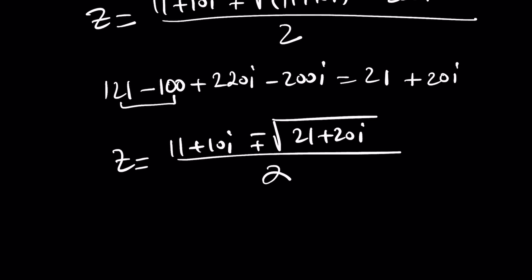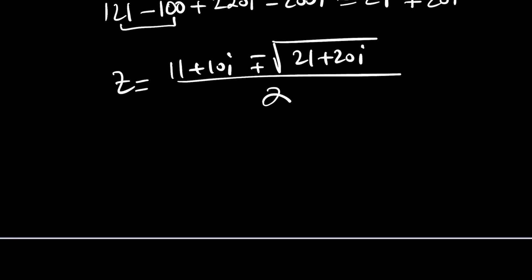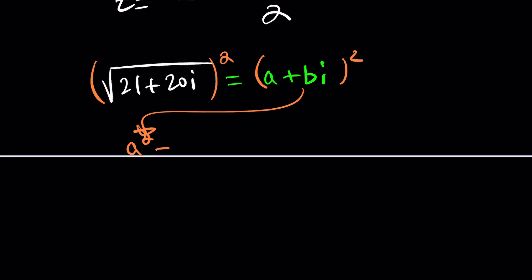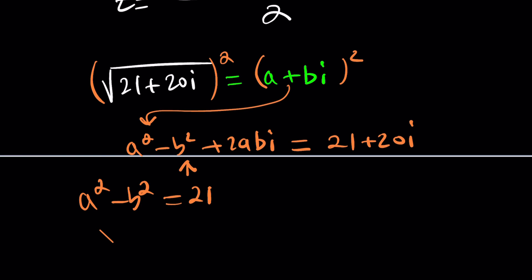You need to find the square root of 21 plus 20i. That's the only challenge with the first method. There are formulas which you can memorize. If you're taking a test or doing math competition, highly recommend it because these problems come up all the time. But if you have plenty of time and you want to find the square root of a complex number, you can set it equal to a plus bi. And now we can square both sides.